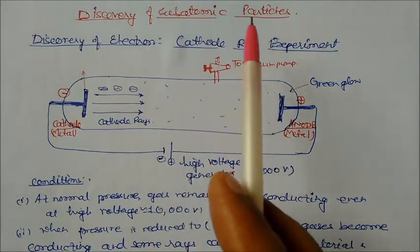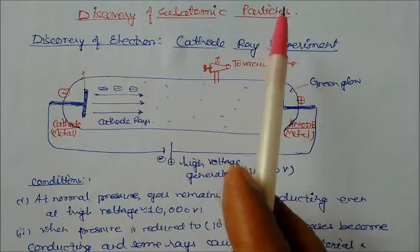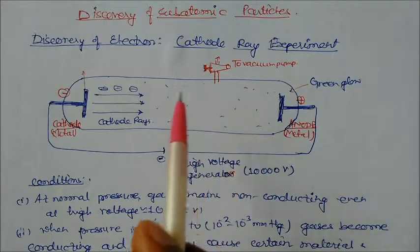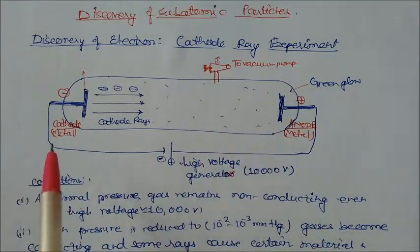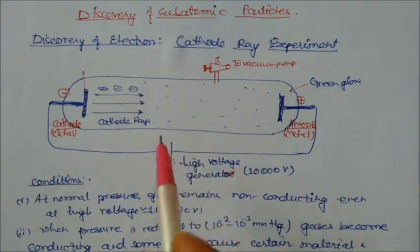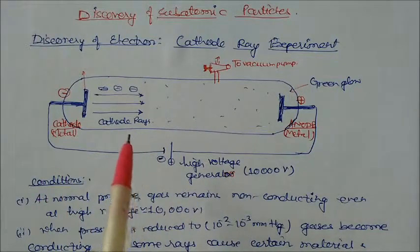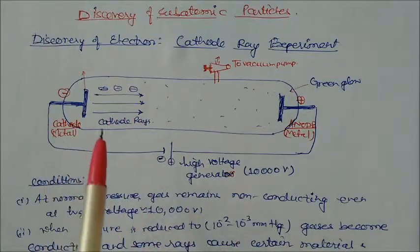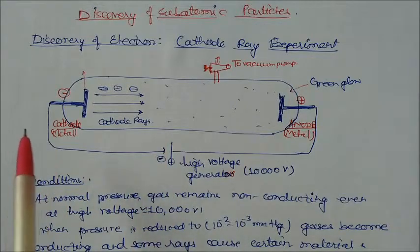Discovery of subatomic particles: when J.J. Thomson was doing experiments on cathode rays, during the experiment he discovered some particles. He discovered more properties of those particles.